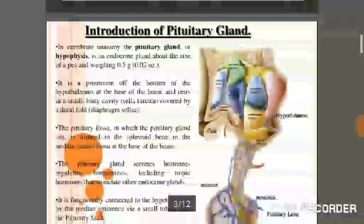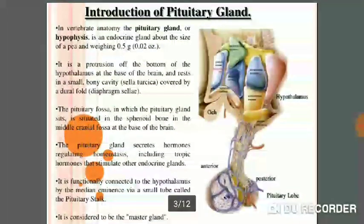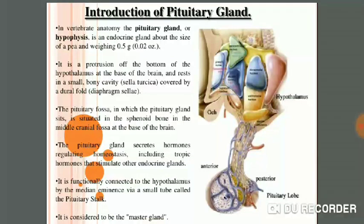The pituitary gland is one of the most important glands of the endocrine system. This gland is also known as hypophysis. The hypophysis is very small in size — it is about one centimeter in diameter and from half to one gram in weight. This soft tissue, the pituitary gland, is protected by a bony cavity known as sella turcica, similar to how the skull protects our brain.